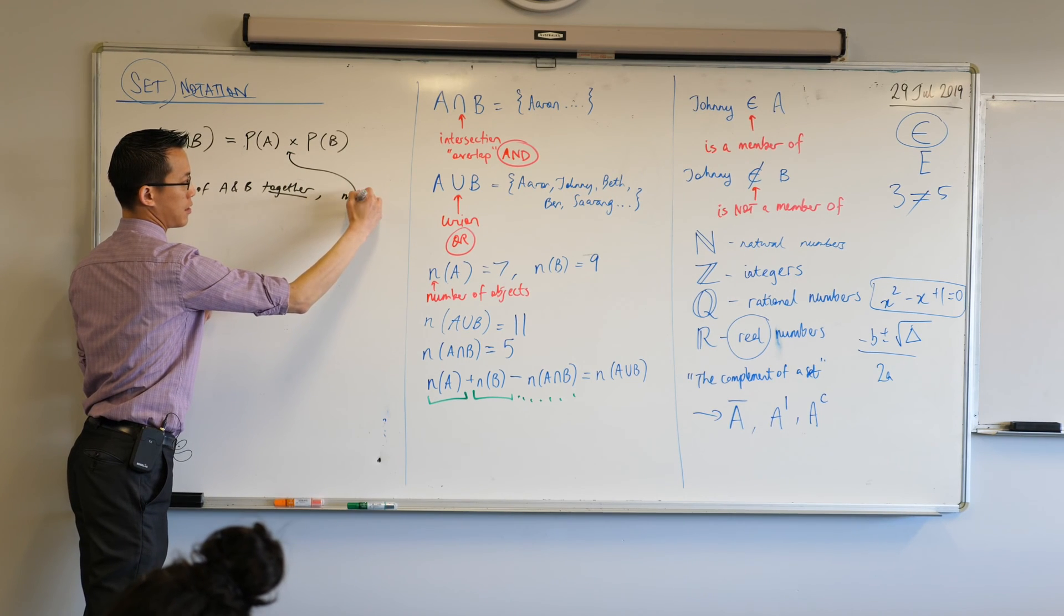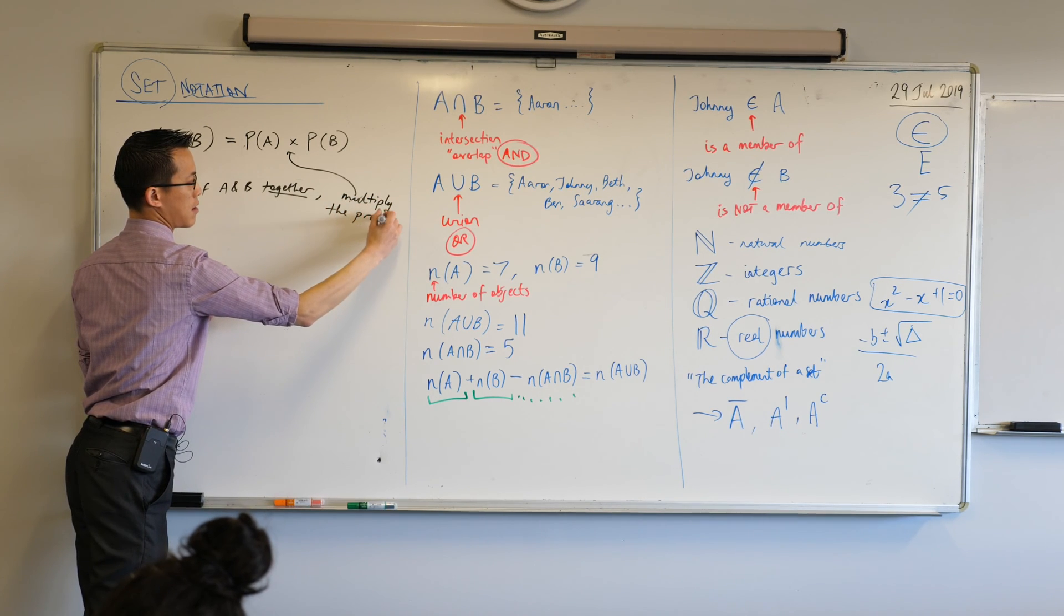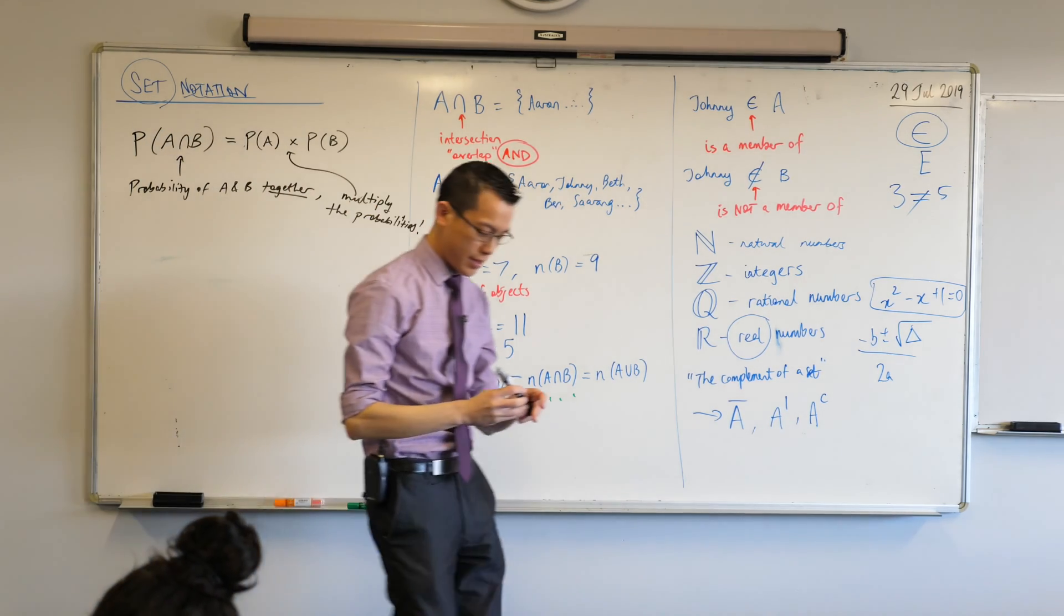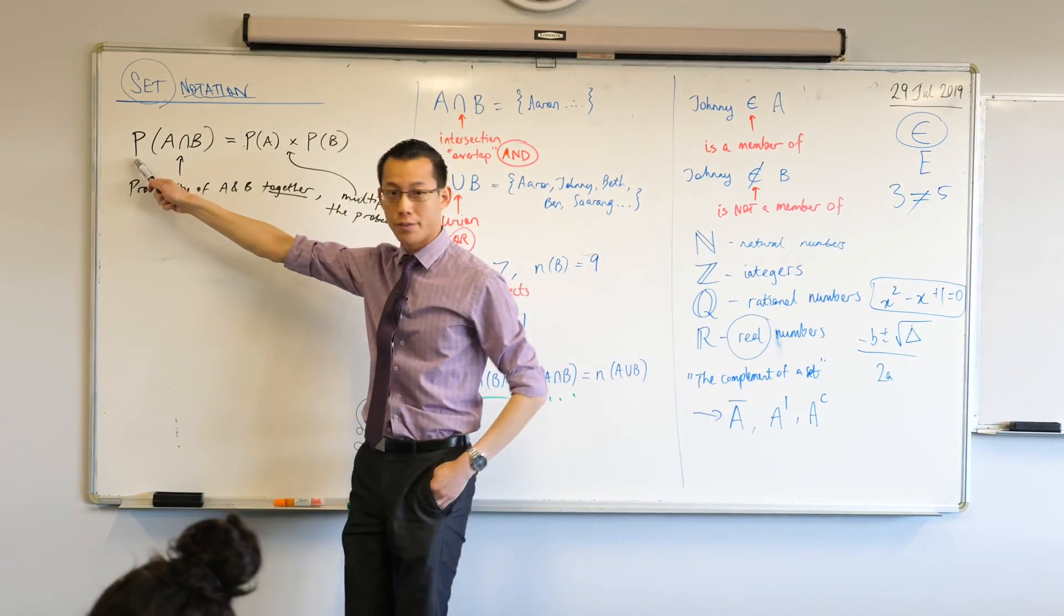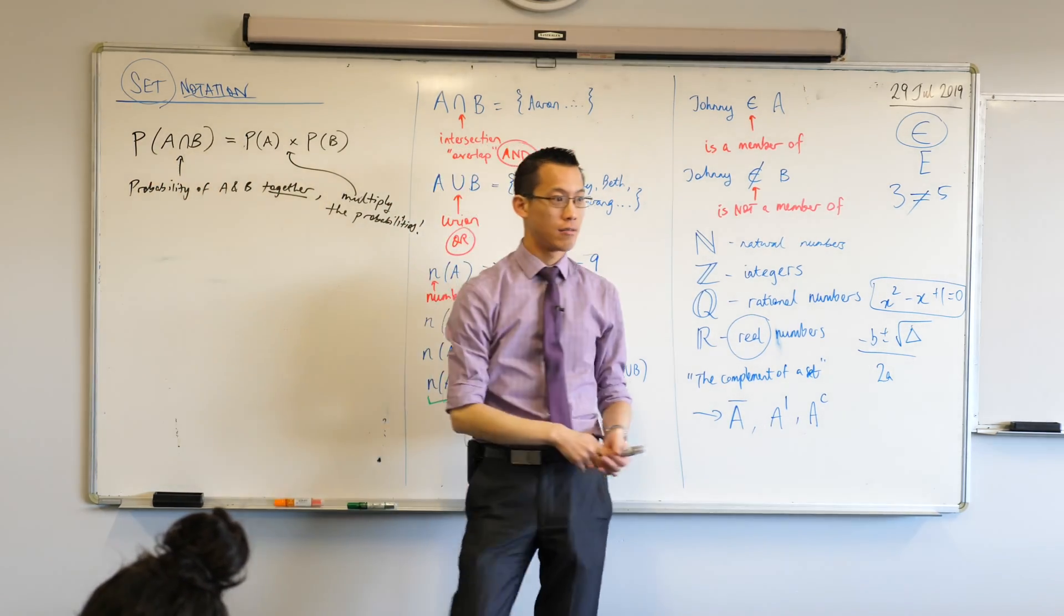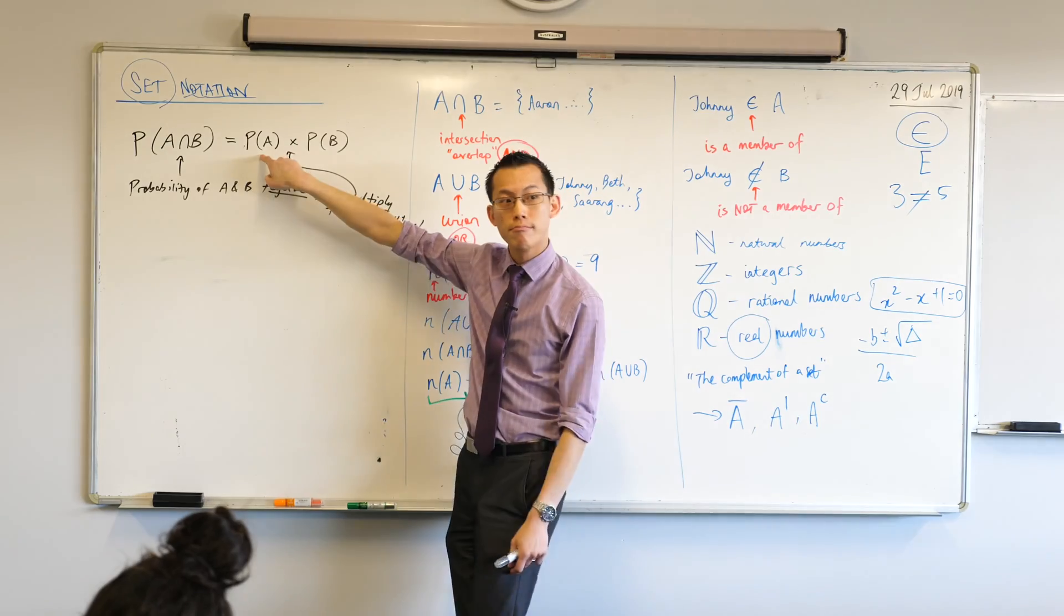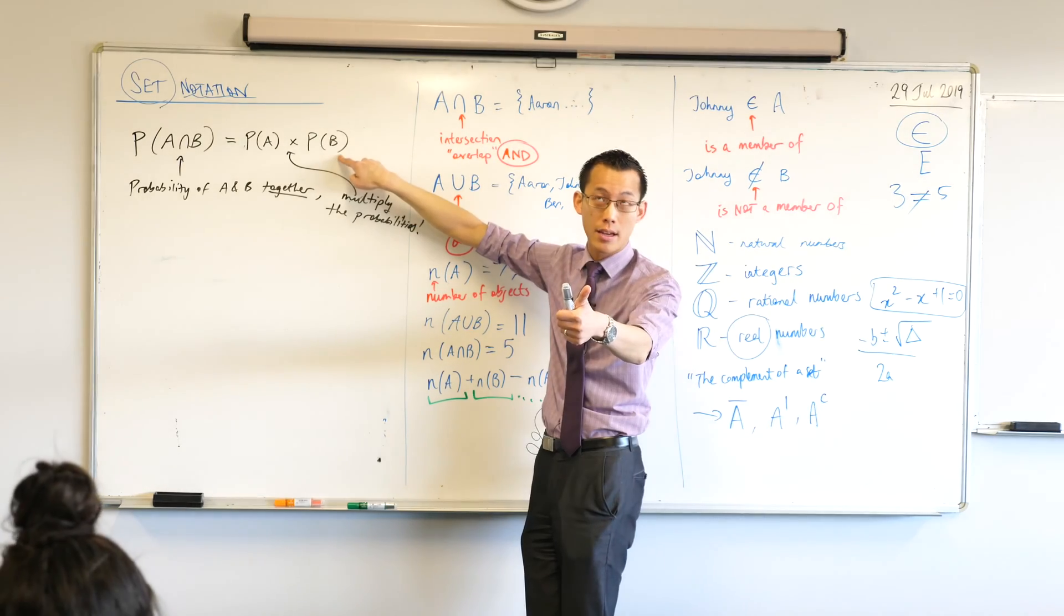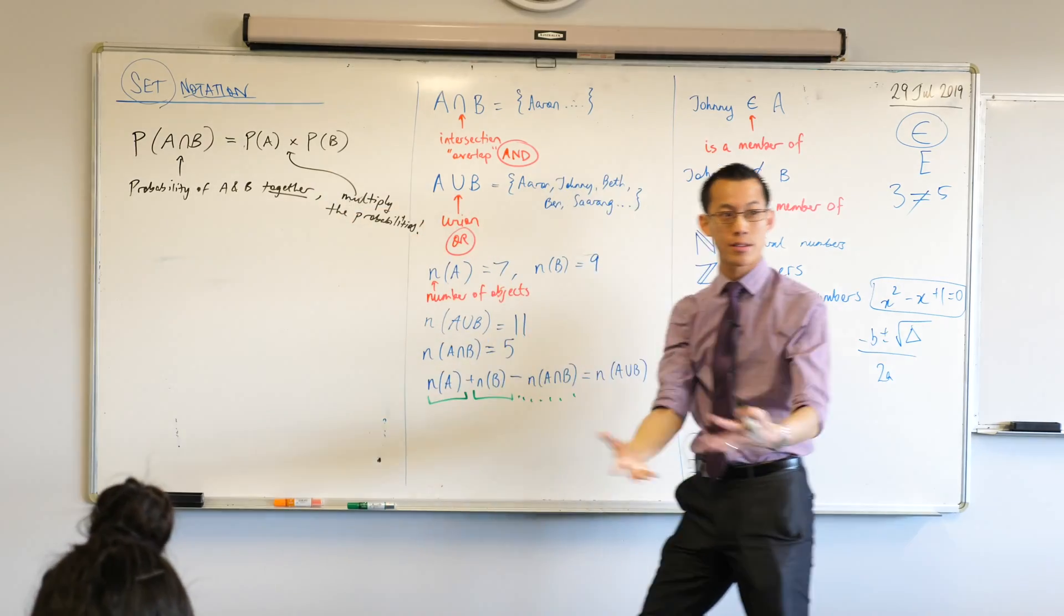For instance, if you wanted to roll the dice and flip a coin, and I wanted to know the probability of rolling a six and also getting a head, flipping a head, what's the probability going to be? Well, what's the probability of rolling the six? Just one in six. And then the probability of flipping heads, that's going to be one out of two. So clearly, you're going to take one over six, multiply it by one over two, and you get your answer of one over 12.